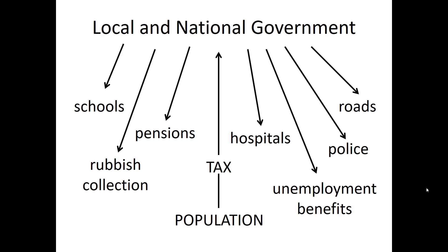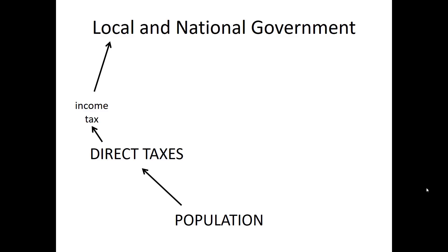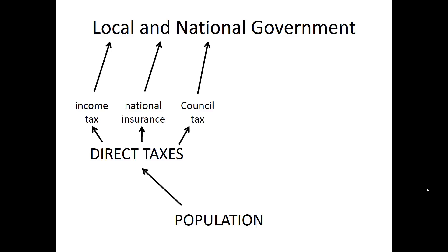The tax system is quite complicated in most developed economies. Broadly speaking, taxes in the UK fall into two main categories. First of all, direct taxes — these are the ones that you know you are paying. Income tax is the one we are looking at today; it gets deducted from your pay every week or every month. National insurance is another one, which we'll look at in a later lesson. And council tax, which is collected directly by local government.